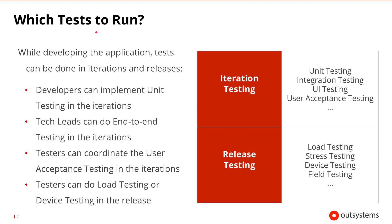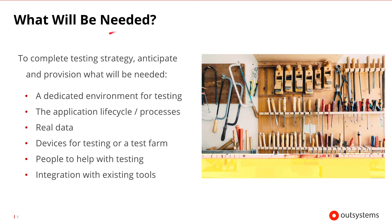Once we know which tests we're going to run, we also have to figure out what will be needed to run those tests. To complete the testing strategy, we need to anticipate and provision what will be needed. In this way, the testing strategy becomes more of a test planning exercise. We're going to need things like a dedicated environment for testing — an OutSystems environment that has specific users and testing data, so that we don't interfere with the development or the production environment. By having that dedicated environment for testing, we'll also need to define the application lifecycle and the operational processes around that testing environment, so the team is aware of what we're going to be doing.